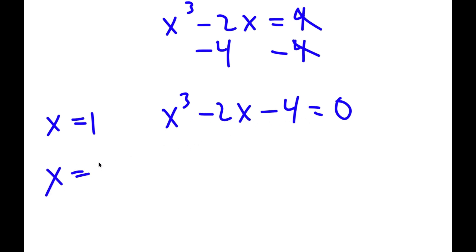Let's try x equals 2. I get 2 to the power of 3, which is 8. 8 minus 2 times 2 is 4, so I have 4 minus 4, which is 0. So x equals 2 is a valid solution.